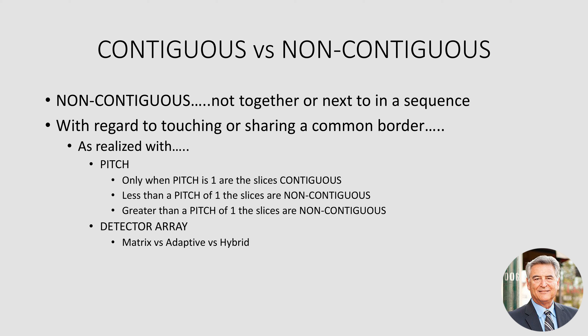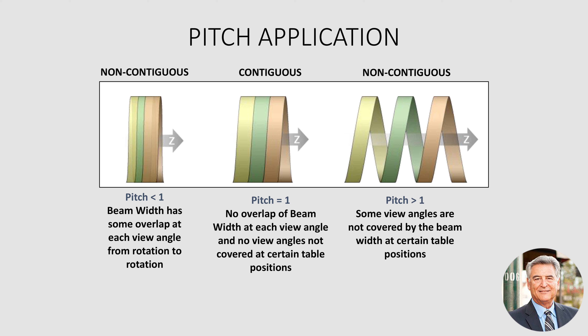We'll show you by example. In slide 4, there's the application relative to pitch, and contiguous is right in the middle — that's where pitch equals one. Notice there is absolutely no overlap of the beam width at any view angle. To the left, we have pitch less than one, non-contiguous — the situation of overlap where every beam width has some overlap at every view angle. On the other extreme, to the right, non-contiguous, we have a pitch greater than one, and we actually have some view angles that are not covered by the beam width at certain table positions — again, a non-contiguous type of situation.